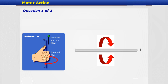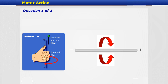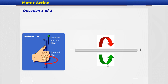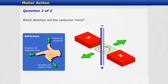Let's test your knowledge. Based on the direction of the electron current flow, which circular arrow indicates the direction of the magnetic flux lines that form around the conductor? The direction follows the electron current flow. In this example, which direction will the conductor move? It will move in the direction of the magnetic field.